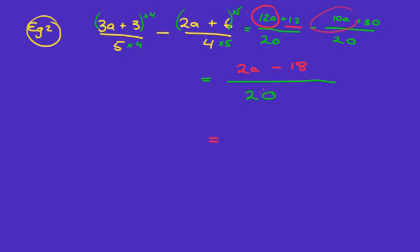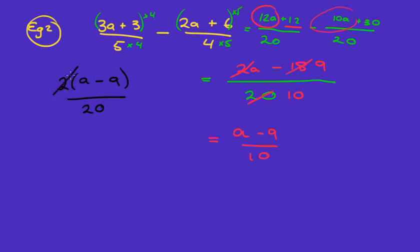Sometimes you can simplify if a number goes into all three terms. Here, two goes into twenty ten times, into two once, and into eighteen nine times, leaving us with a minus nine over ten. Alternatively, you could factorize two out of the numerator first to get two(a − 9) over twenty, then cancel the two, which gives the same answer: a minus nine over ten.